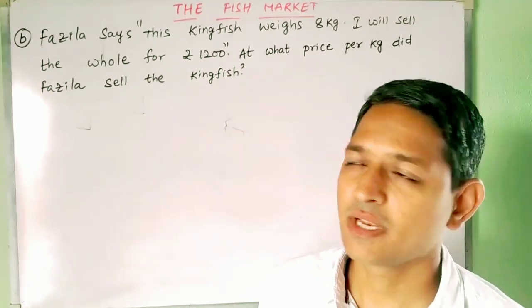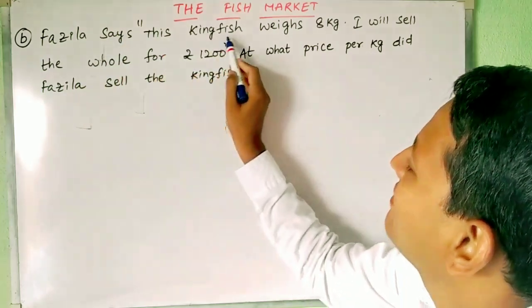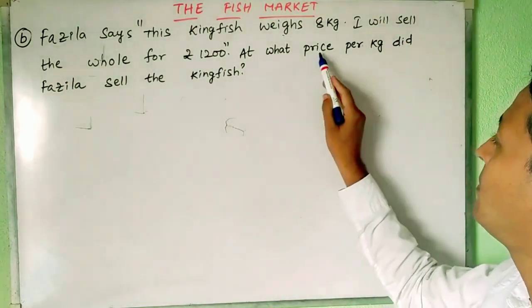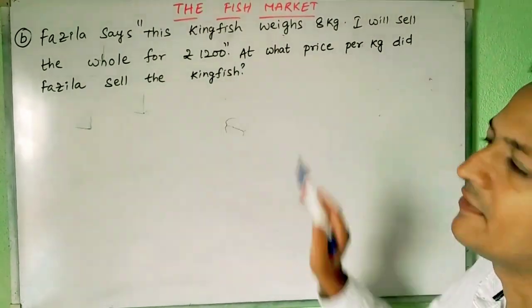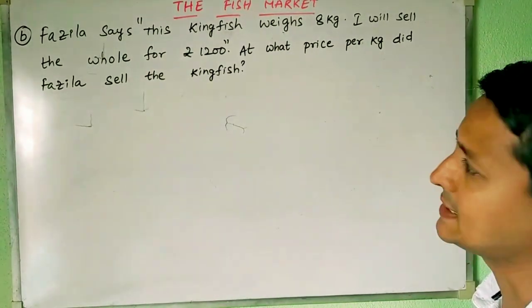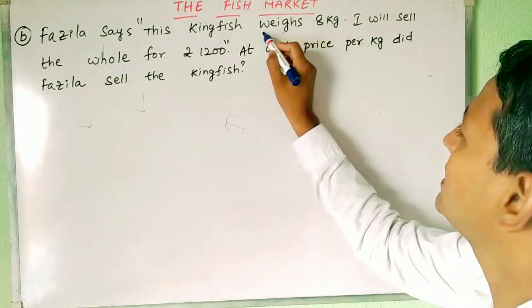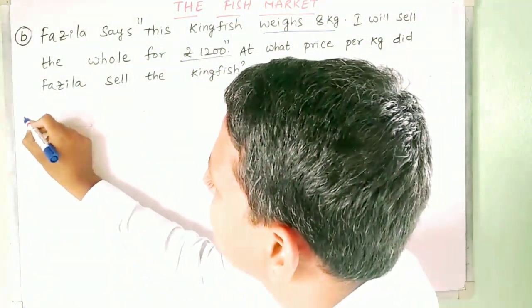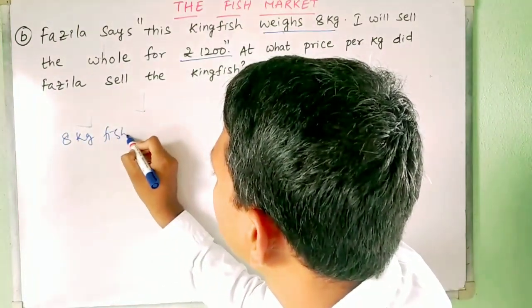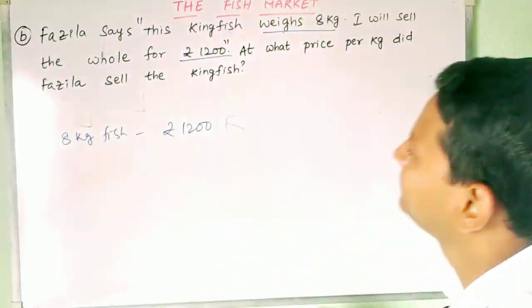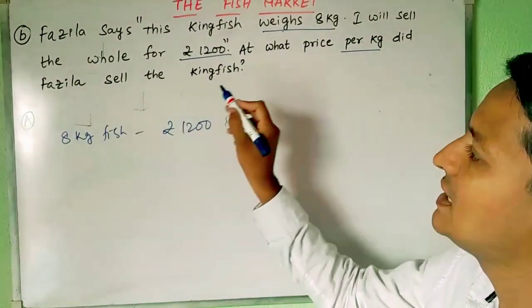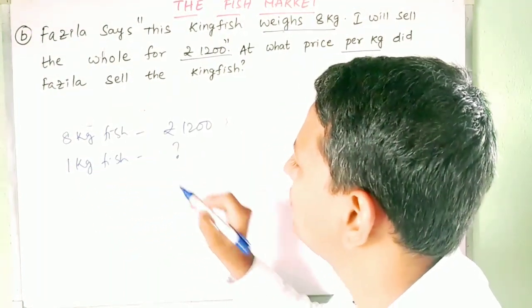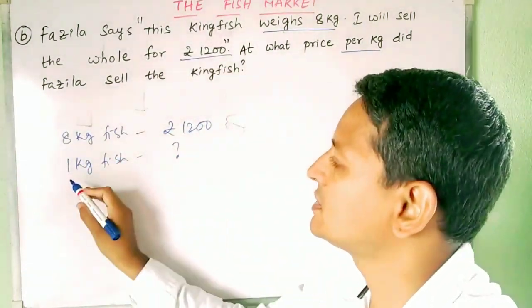Now let us try to understand the second problem. Fuzzila says this kingfish weighs 8 kg, and she will sell the whole for rupees 1200. So what is given here? 8 kg of kingfish costs rupees 1200. At what price per kg did Fuzzila sell the kingfish? 'Per kg' means 1 kg. So what is the cost of 1 kg?